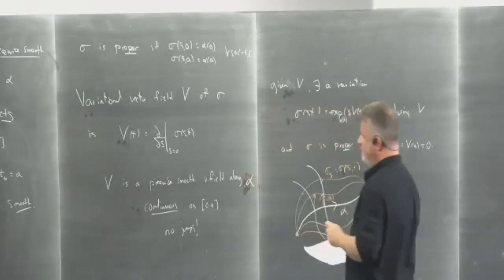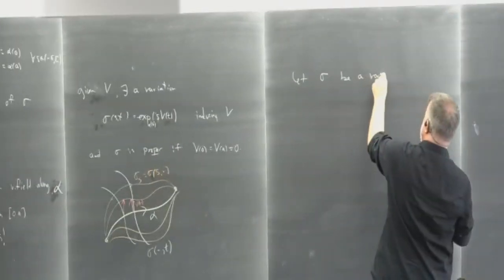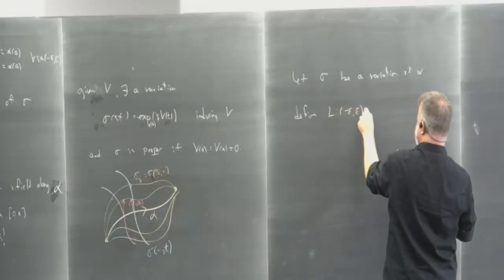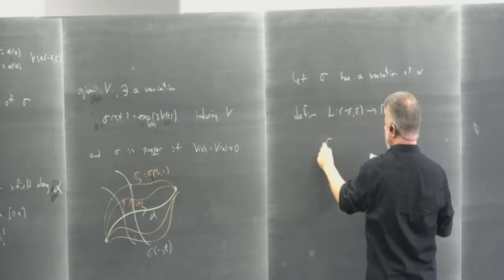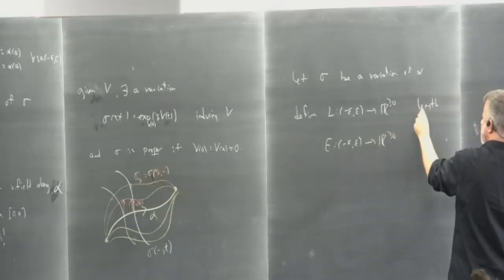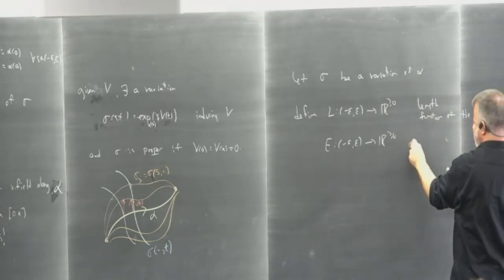There's a small typo — it should say vector field along alpha, not gamma. I usually use alpha for an arbitrary curve and gamma for a geodesic. So given a variation sigma of alpha, define L from minus epsilon to epsilon to the non-negative reals — that's the length function — and E — the energy function of the variation.